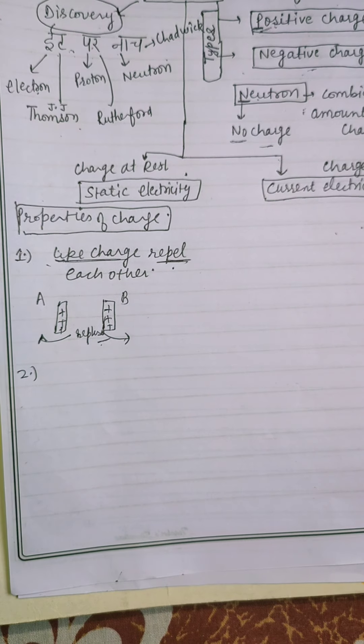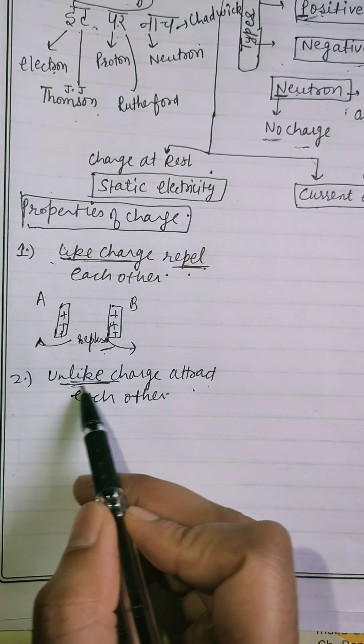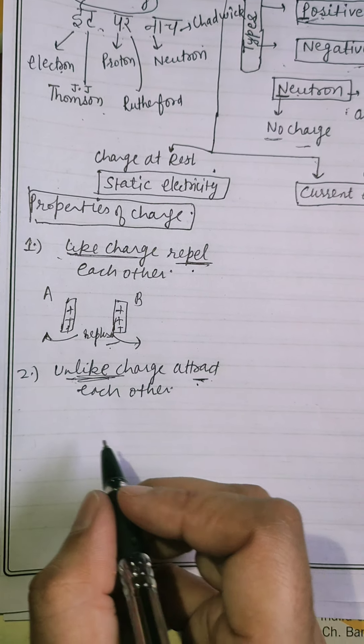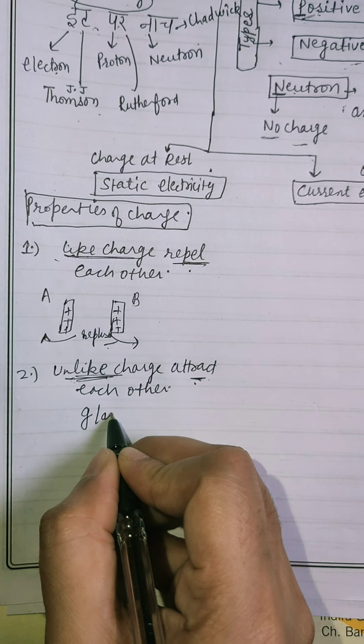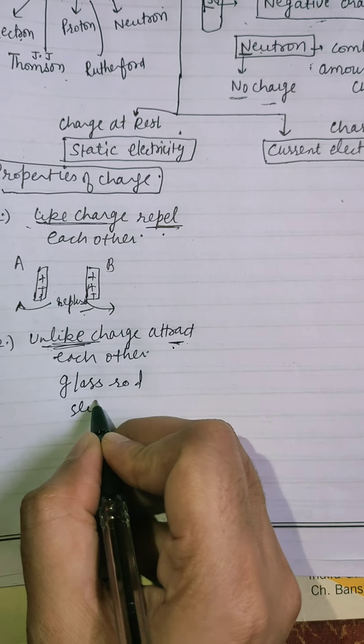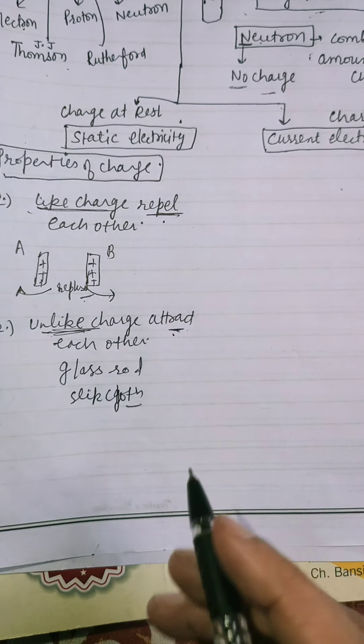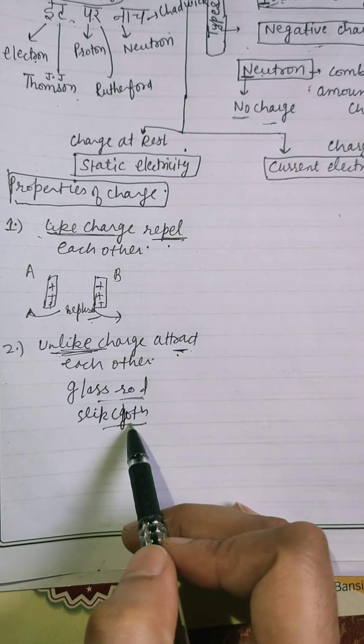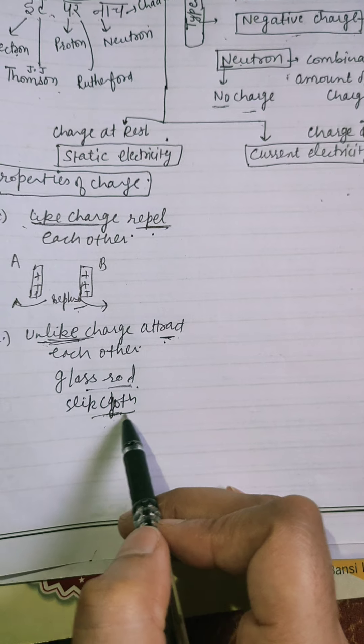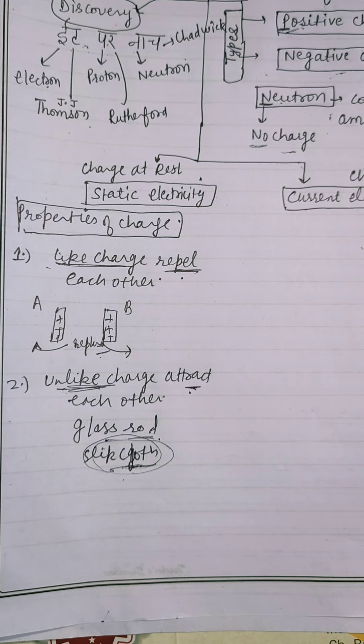Second, unlike charges attract each other. Unlike means different charges attract each other. For example, if we take a glass rod and silk cloth. When we rub glass rod with silk cloth, then glass rod loses electrons and silk cloth acquire the charges. So, attract each other.